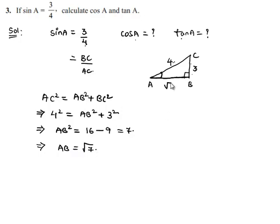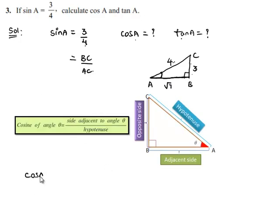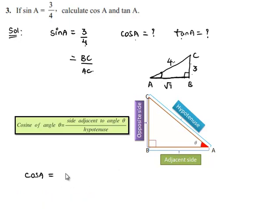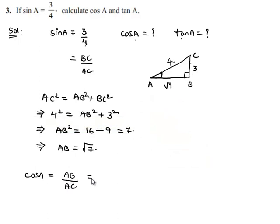Now we got AB = √7. He asked us to find the value of cosA. We know that cosA is equal to the adjacent side divided by the hypotenuse. Therefore, cosA = AB / AC = √7 / 4.